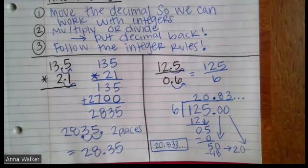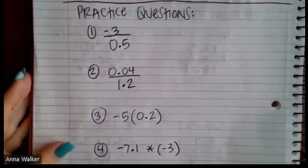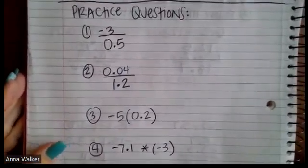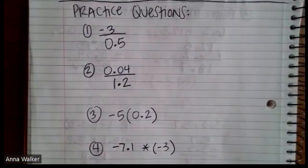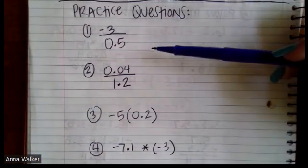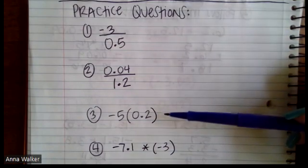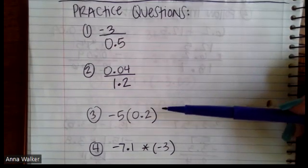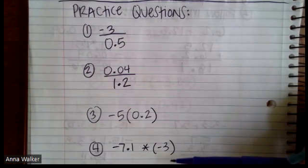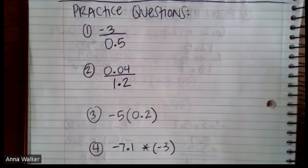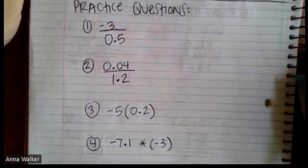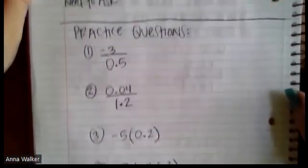If this is your second time watching the video, I'm going to go ahead and flip over to your practice questions. Here are your four practice questions that you have. Go ahead and take a pause to copy them down. And if you're having trouble reading any of them, this is negative 3 divided by 0.5. This is 0.04 divided by 1.2. This is negative 5 times 0.2. And this is negative 7.1 times negative 3. If you have any questions or if you get stuck, please rewatch this video. Write your questions down at the top of this page.